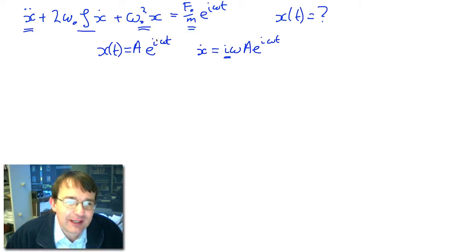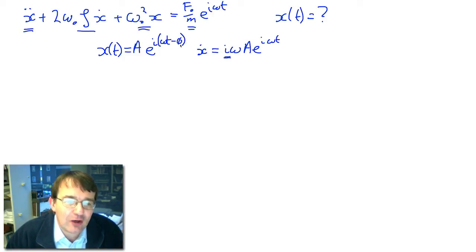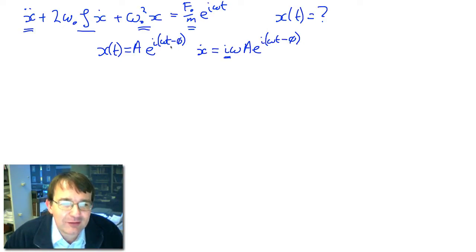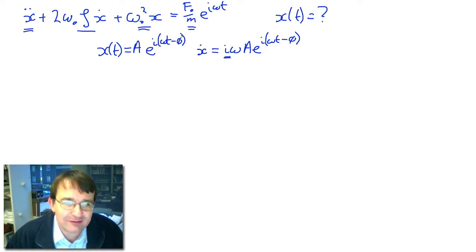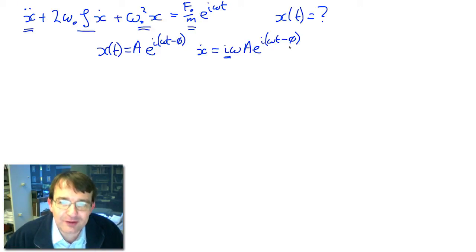The fix is to make A complex by adding a constant phase φ to the trial solution: x = A·e^(i(ωt − φ)). Since φ is constant, differentiation is unaffected. Now after cancelling e^(iωt), every term becomes complex, and three complex numbers can sum to a real number for the correct value of φ. This gives us solutions for both amplitude A and phase φ.